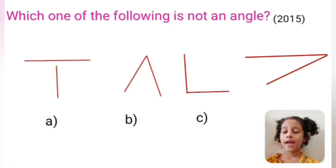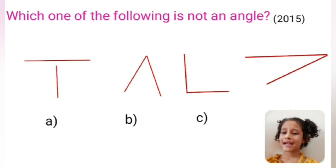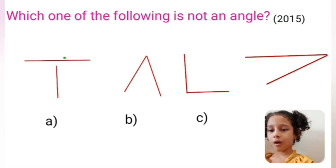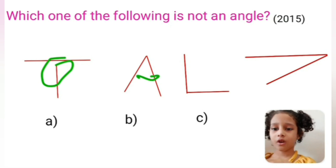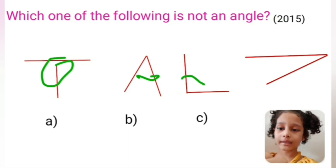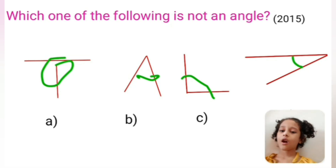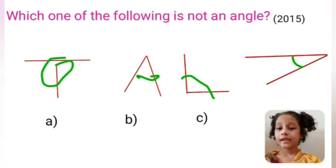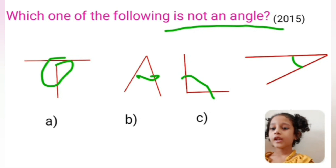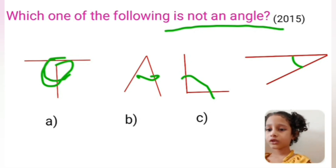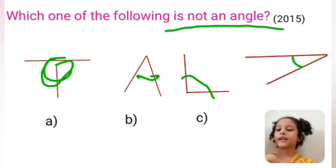Which one of the following is not an angle? We know that when two lines are joined, they form an angle. Option A: two lines are not joined together. Option B: two lines are joined. Option C: two lines are joined. Option D: two lines are also joined. So option A is our correct option — it is not an angle.